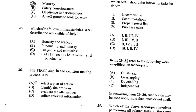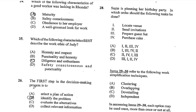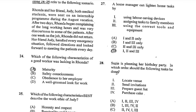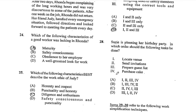Number 26. The first step in the decision-making process is to B, identify the problem. Number 27. A home manager can lighten home tasks by: 1. Using labor-saving devices; 2. Assigning tasks to family members; 3. Using the correct tools and equipment. That would be D, 1, 2, and 3. Number 28. Suzy is planning her birthday party. In which order should the following tasks be done? Suzy should begin by preparing the guest list first, then locate the venue, after which she would send out invitations, and lastly, purchase the cake.